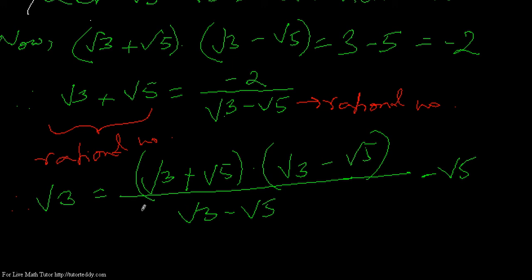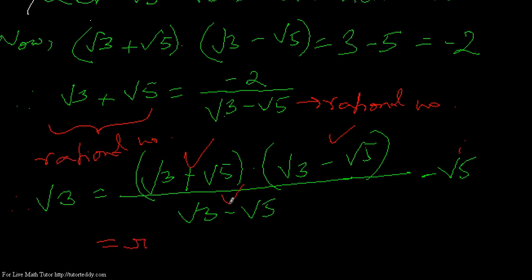Now, both √3 minus √5 are rational numbers, so the right-hand side of this expression is a rational number. Since this is rational, this is rational, and this is rational, the whole right-hand side is rational. And √5 is also on the right-hand side, so this part is rational. But the left-hand side, that is √3, is not a rational number.